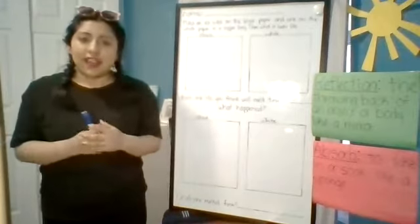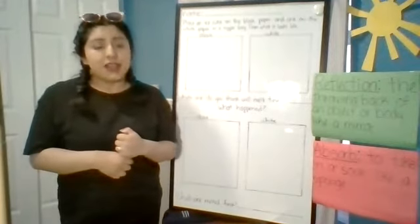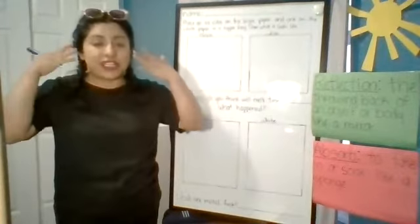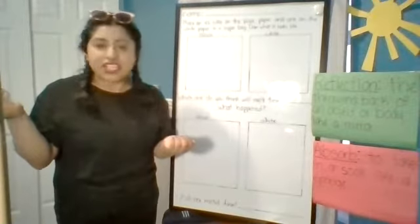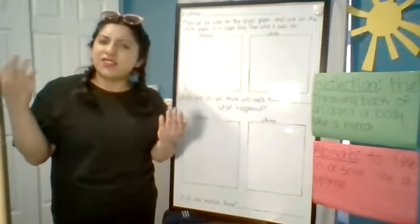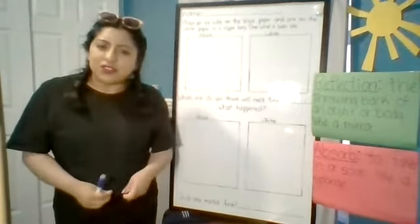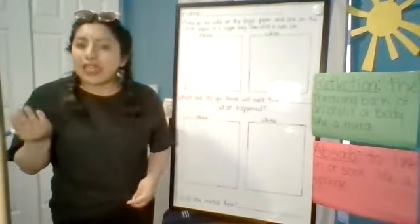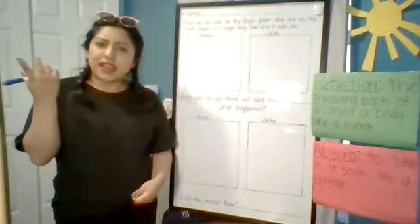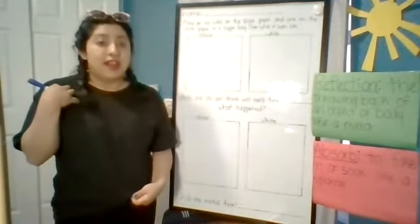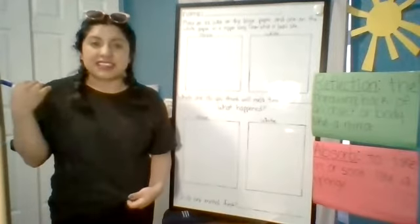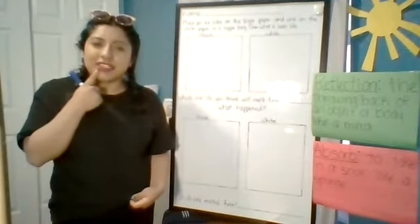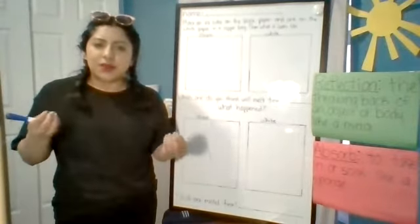Because guess what happened to me the other day. I went to the beach and it was a really hot day. I went with my friend and I was feeling hot and dizzy, but my friend was feeling fine. We got to thinking — maybe the color of our shirts had something to do with it. I was wearing a black shirt, and my friend was wearing a white shirt. Maybe I was absorbing more heat and light from the sun, and my friend was reflecting it because she was wearing a white shirt.